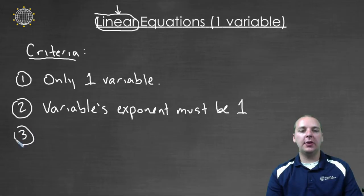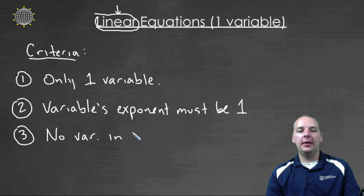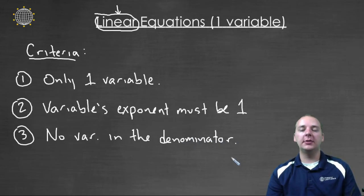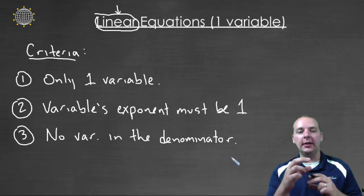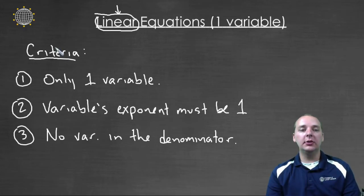Number three, the last criteria, is that there cannot be any variables in the denominator. You can have fractions, that's fine, we have fractions all the time. But just if you have a fraction, make sure any variables that you have are appearing in the numerator and not in the denominator. So as long as you satisfy these three criteria, then you have a linear equation.